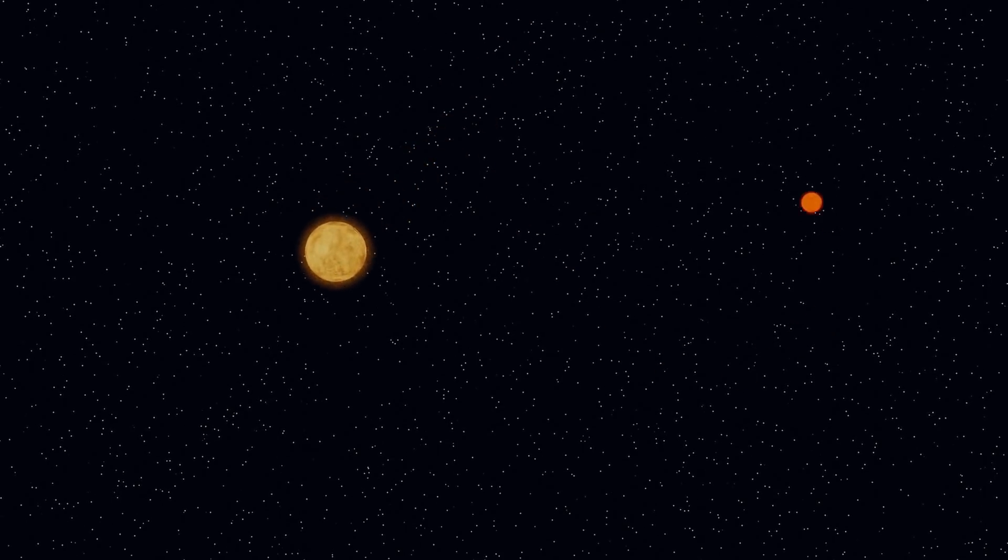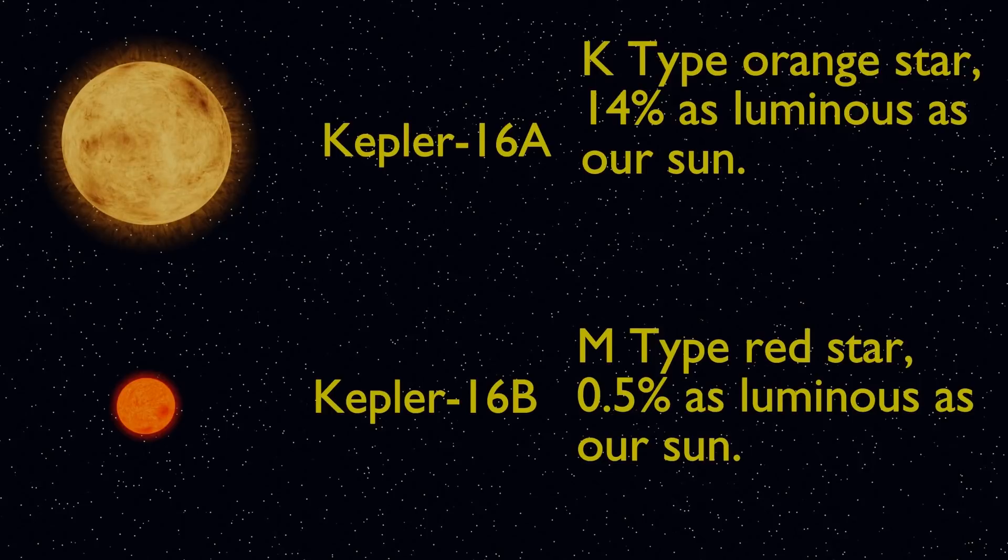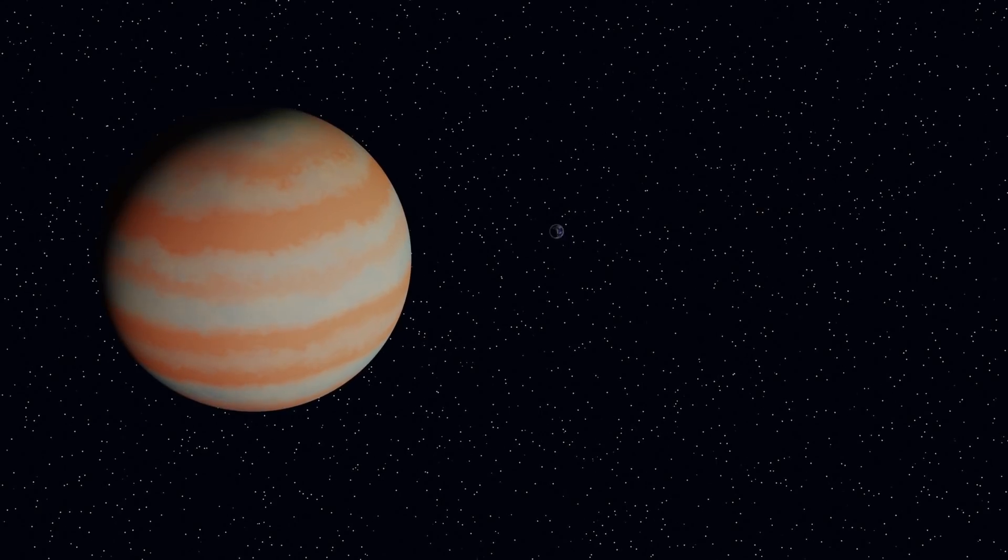Straight on at number four, we come to Kepler-16b, also dubbed Tatooine. This is a planet orbiting a binary star system. The stars, called Kepler-16a and 16b, are an orange and a red star, considerably cooler and less luminous than our sun. The planet itself is a gas giant, slightly smaller than Saturn. Even though the planet has no solid surface, it may have moons, and these could have atmospheres.